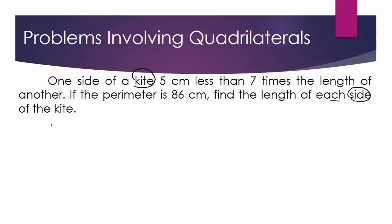In a kite, two pairs of consecutive sides are congruent. So if side 1 equals side 2, and side 3 equals side 4, let S sub 1 be x. The other side S sub 3 is 5 cm less than 7 times the length of another, so it is represented as 7x minus 5.